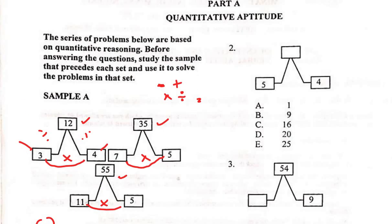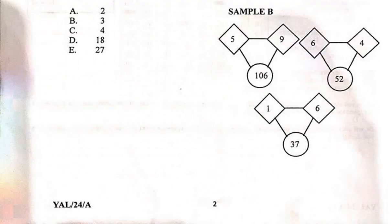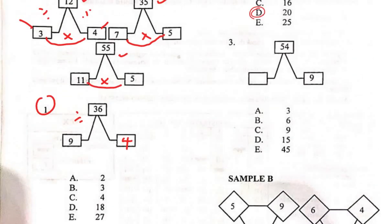Question 2 is direct: 5 times 4 gives 20, which is option D. Moving to Question 3: we need to find what times 9 gives 54. I already know it's 6, but if that takes time, just divide — 54 divided by 9 is 6, and 6 times 9 is 54.